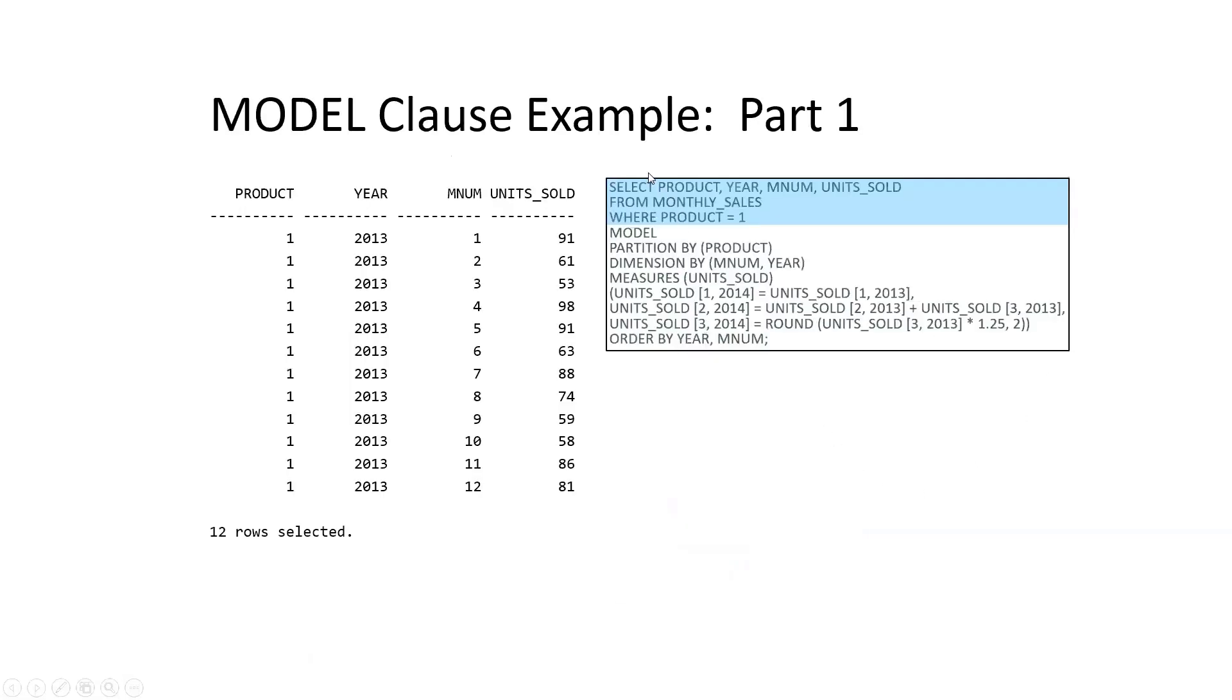So first of all, select product year, month number and units sold from monthly sales, where product equals one. This is just a very basic SQL query that we should be familiar with already. And it would have this type of output here.